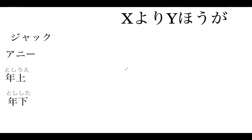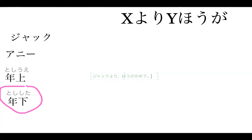Now make 'Annie is younger than Jack' using としした. Jack gets より, Annie gets の ほうが: ジャックより アニーのほうが としした — 'Annie is younger than Jack.' Remember: の goes before ほうが for nouns, and you never put の after が.